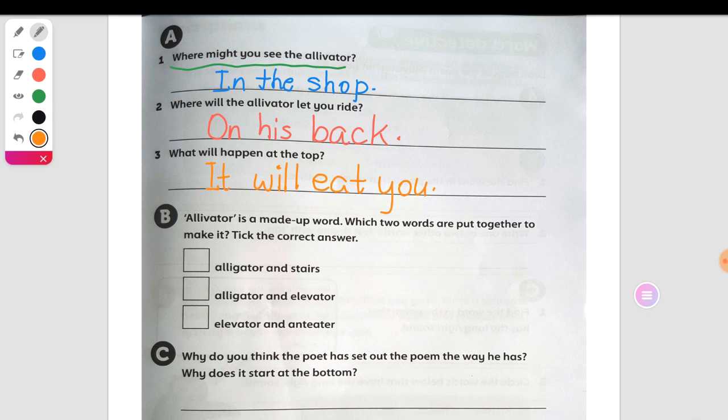Let's read again the questions. Where might you see the elevator? In the shop. Where will the elevator let you ride? On his back. What will happen at the top? Once you reach the top? It will eat you. That's great. Are you done with this? Let's go to question B.